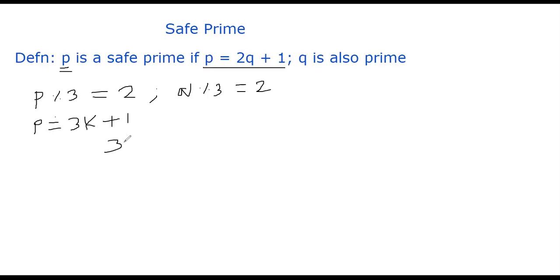Which means 3k plus 1 is equal to 2q plus 1, right? So now we can simplify this and say that then this means that your q must be 3 by 2 times k. But 3 by 2 is a fraction. That means k must be a multiple of 2.